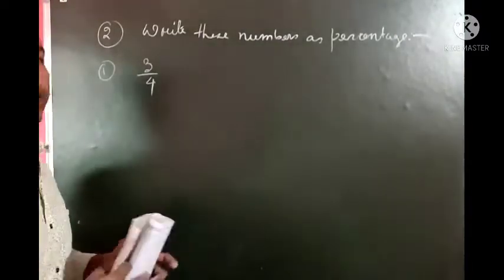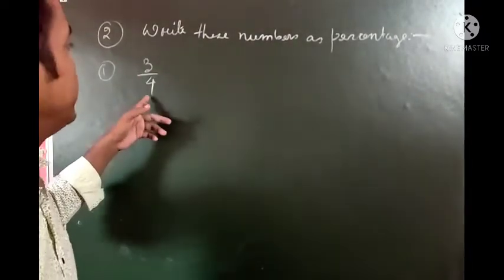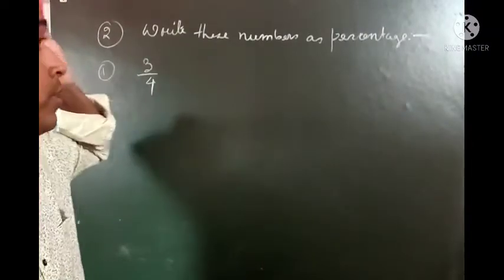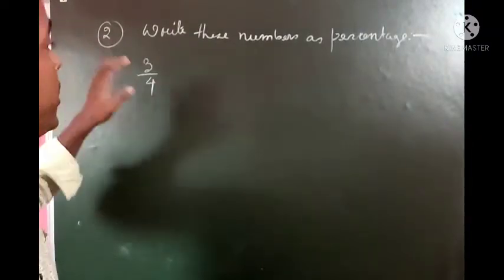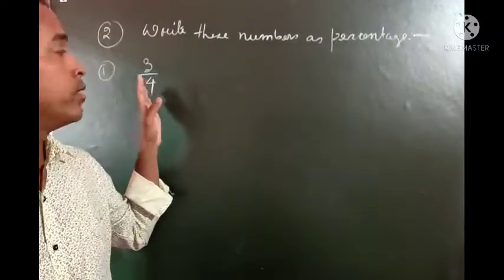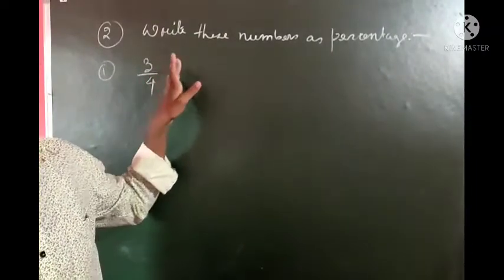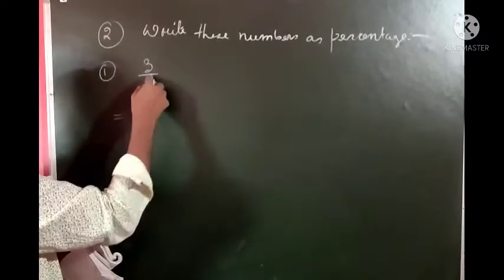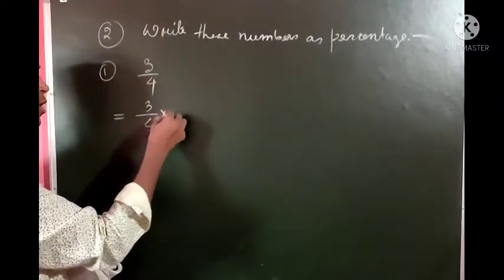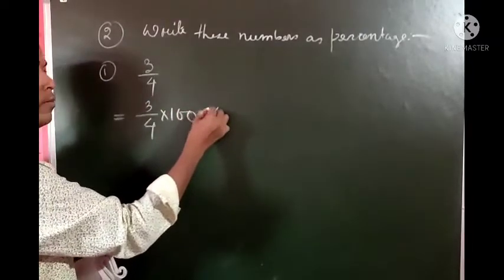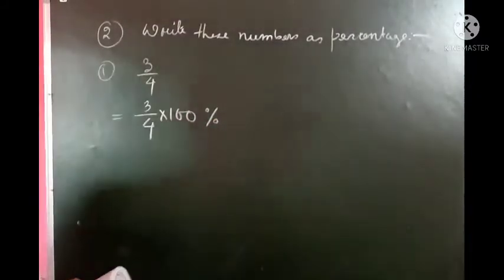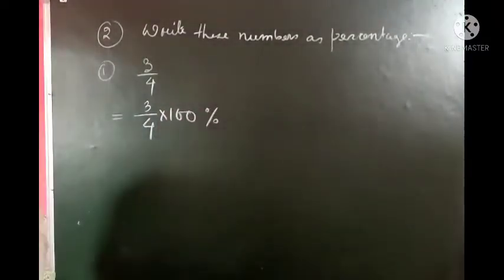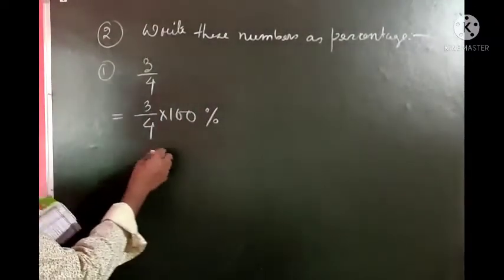The next question: here a fraction is given, so you should convert this fraction into percentage. To convert to a percentage, we multiply the given fraction by 100 and give the percentage sign. So 3 by 4 can be written as 3 by 4 into 100 percentage. This is the way to convert a fraction into percentage.